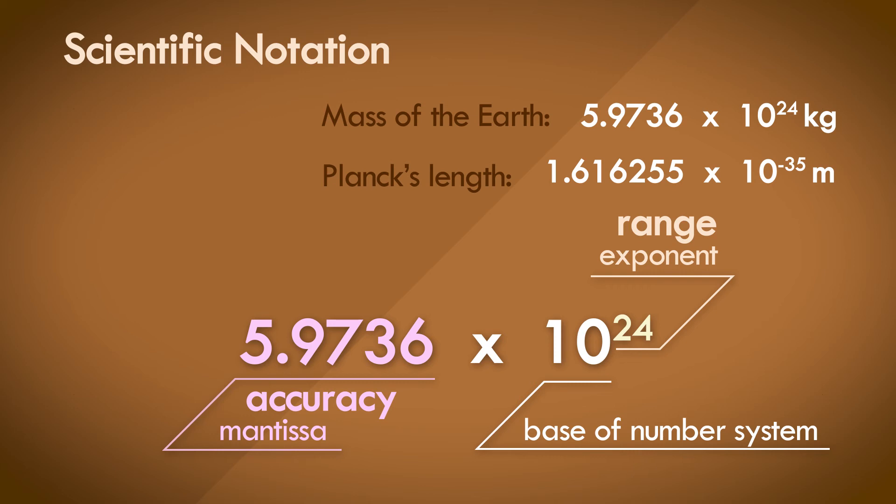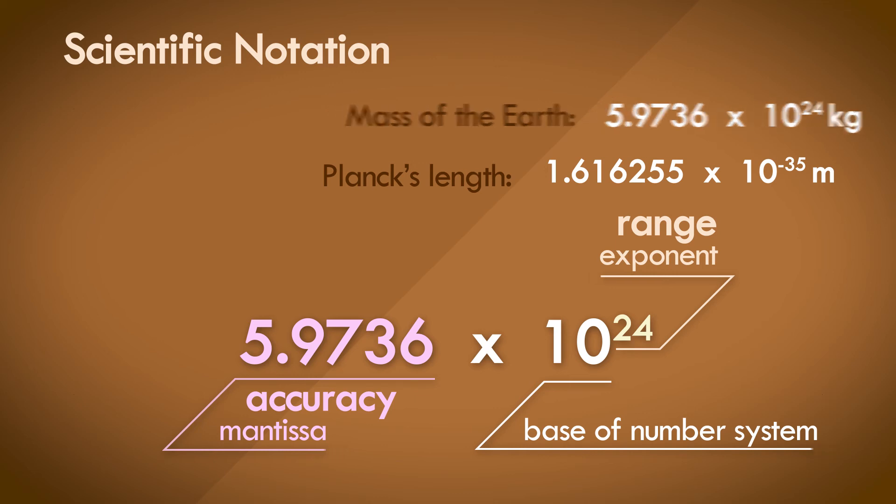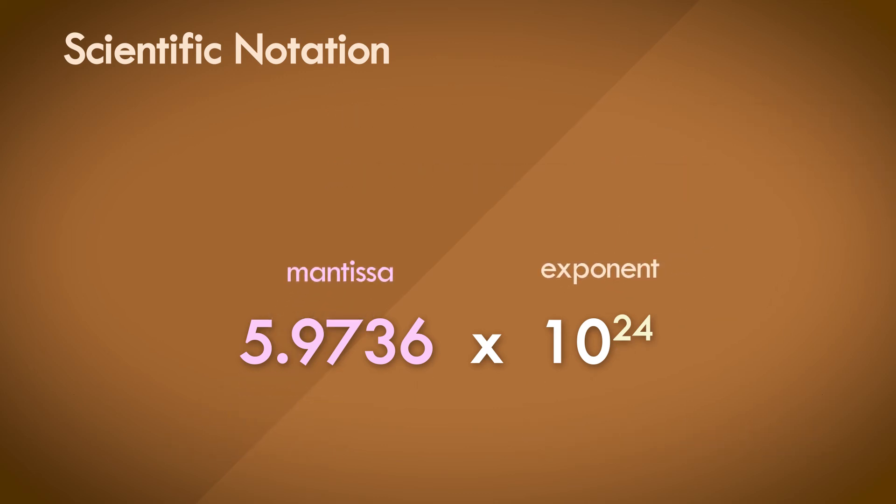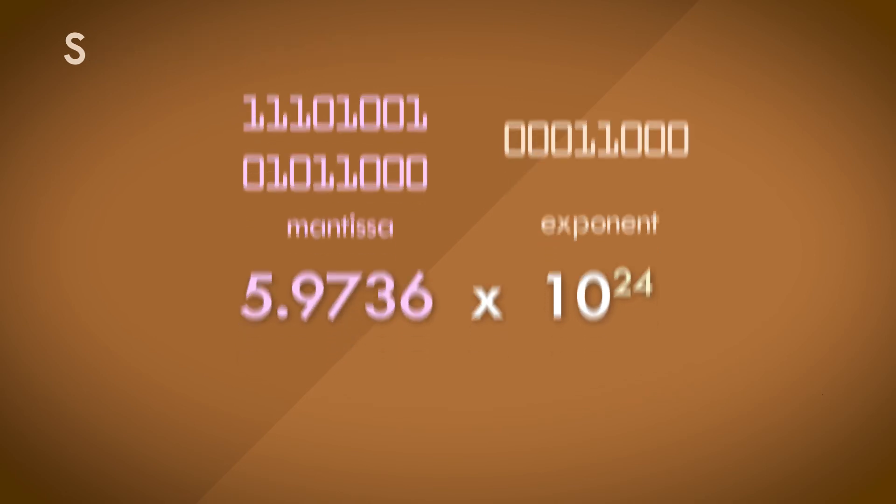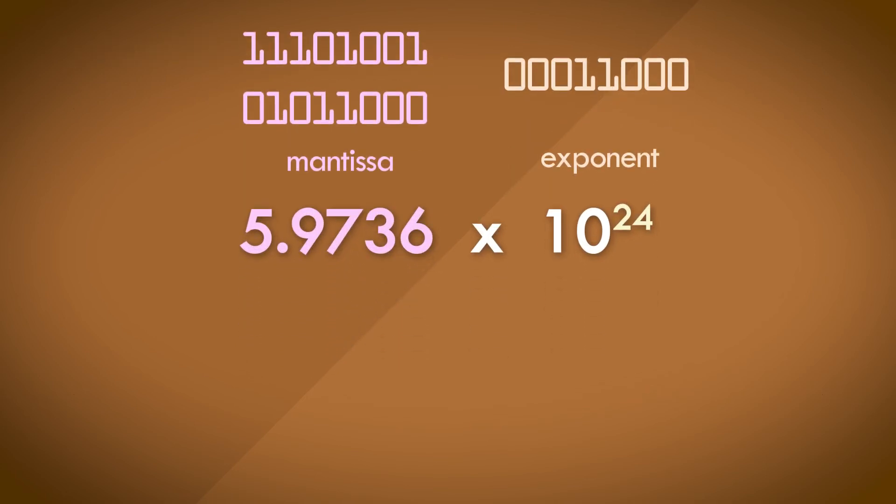Now this notation is a lot more expressive. You can already envision ways of representing these numbers in binary. You can essentially have two fixed point numbers: one for the mantissa and one for the exponent. And you can build some rules into the representation system such that the number is always normalized. Meaning, there will always be one digit to the left of the radix point, and this digit shouldn't be a 0.